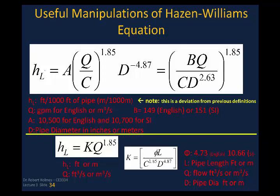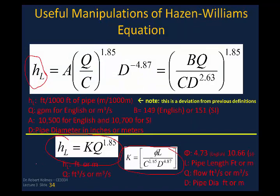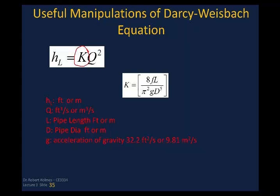Returning to the Hazen-Williams equation, there are two forms expressed in terms of head loss. The first gives head loss per 1,000 feet of pipe (or per 1,000 meters). The second form, which I recommend, gives head loss directly in feet or meters — use that form with the associated K value. Similarly, the Darcy-Weisbach can be expressed in the same H_L = K·Q² form, which is very useful for the Hardy-Cross method in pipe network analysis.